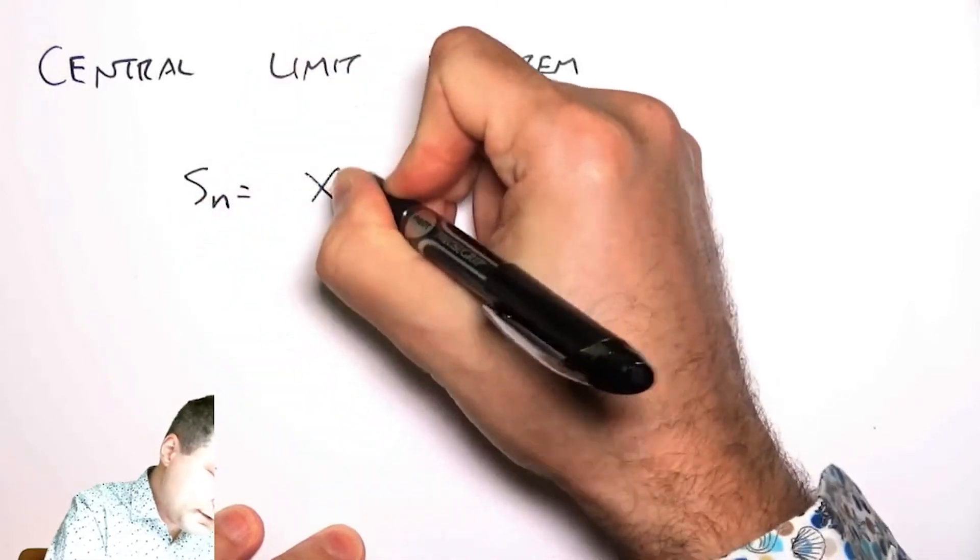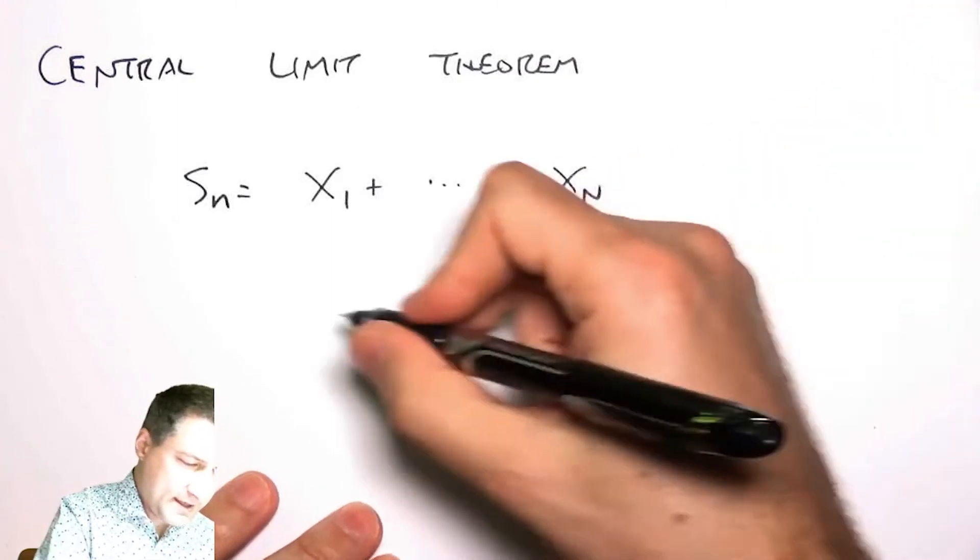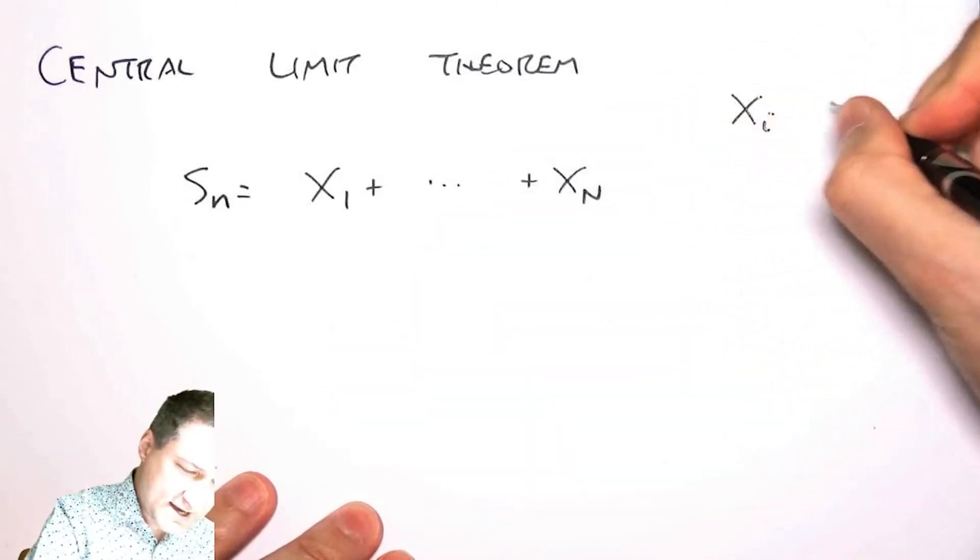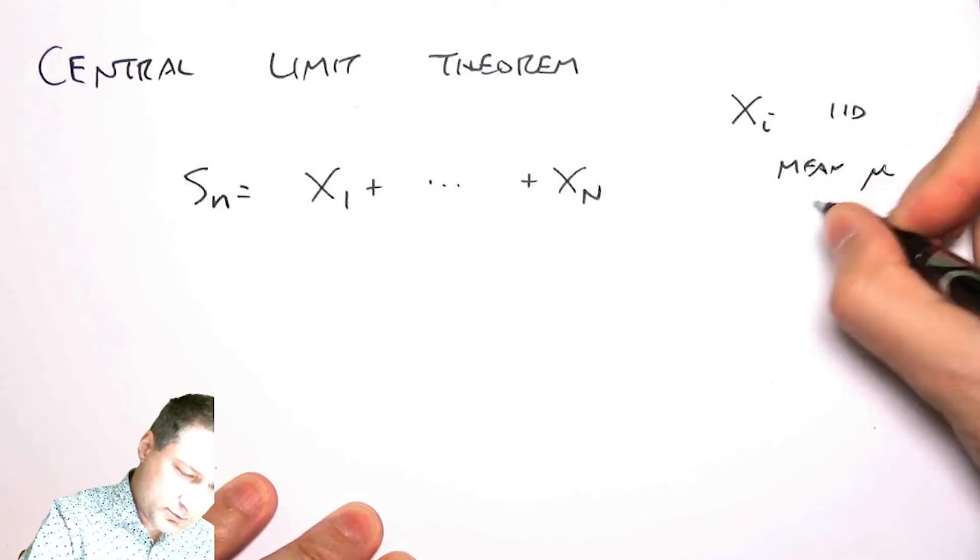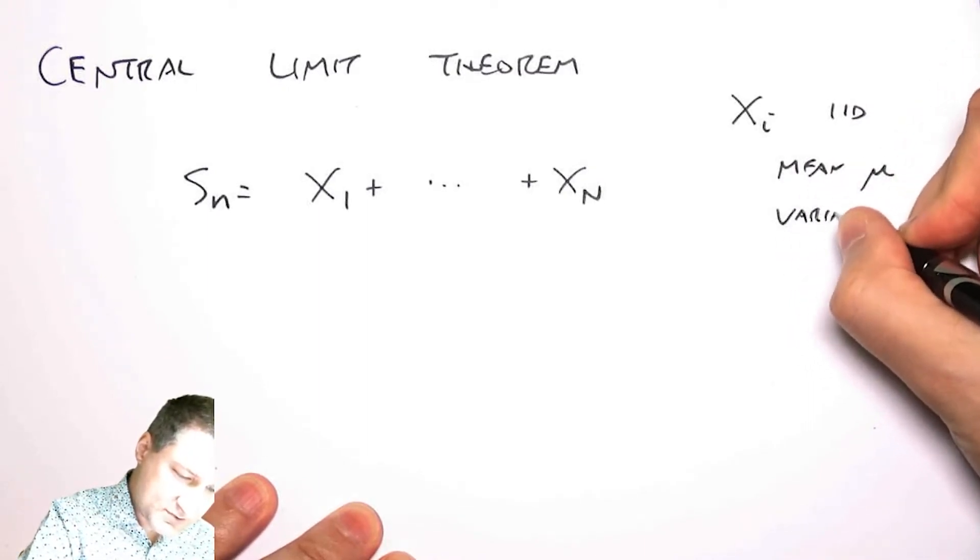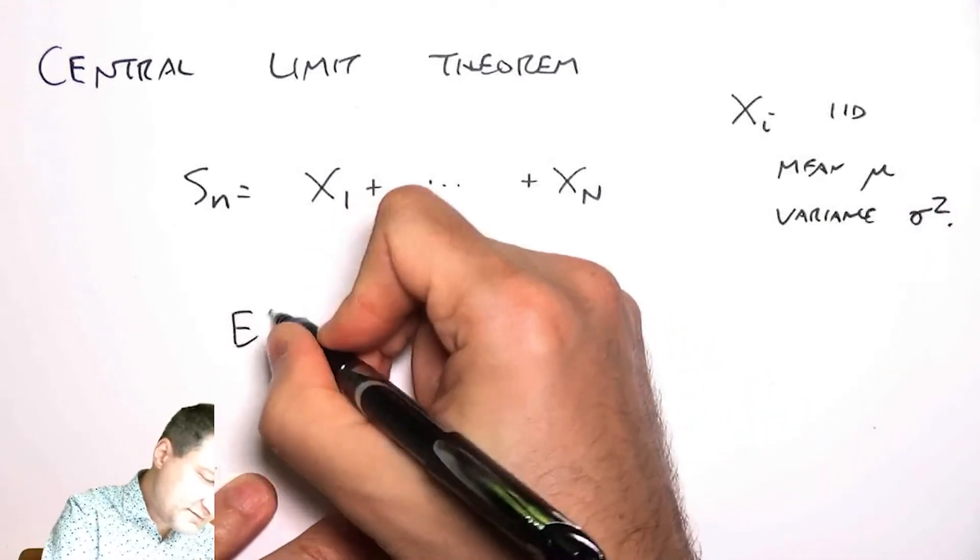From before, we talked about the sum and the mean of a bunch of random variables. If all of these xi's are iid and they have mean mu and variance sigma squared, we showed that the expected value of the sum was n times mu and the variance of the sum was n sigma squared.